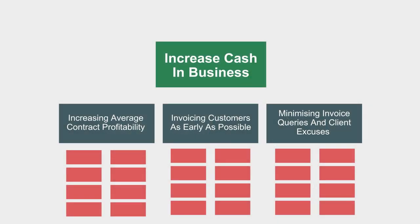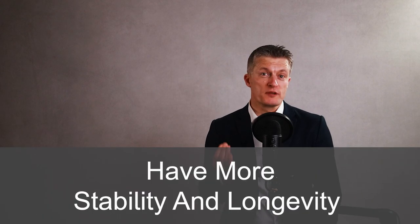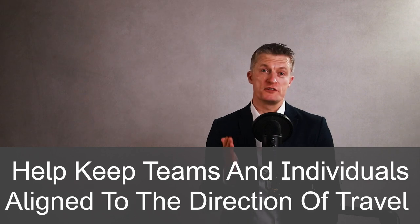Another example: the team might be tasked with increasing the cash in the business, so the KRAs for the team might be: firstly, increasing average contract profitability; secondly, invoicing customers as early as possible; and third, minimising invoice queries and client excuses to delay payment. KRAs are higher level, have more stability and longevity, and help keep teams and individuals aligned to the direction of travel and the strategy of the wider team and business compared to specific goals and objectives.